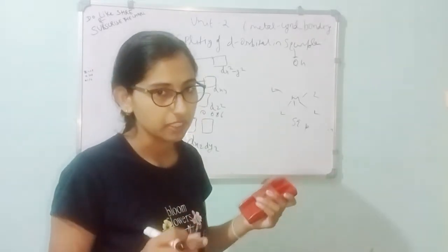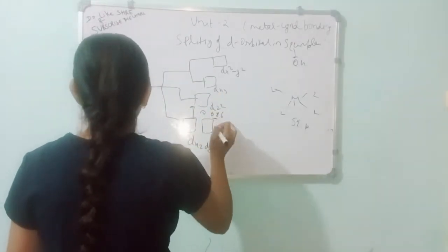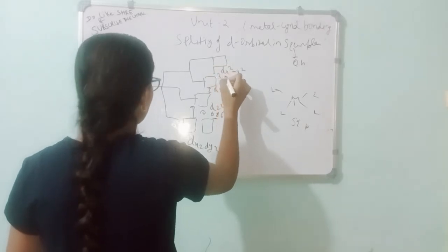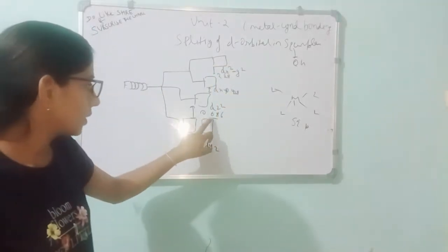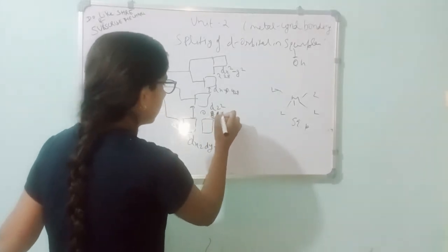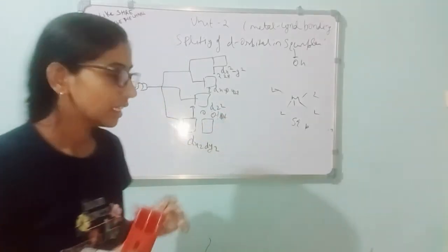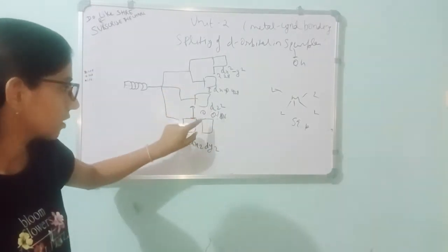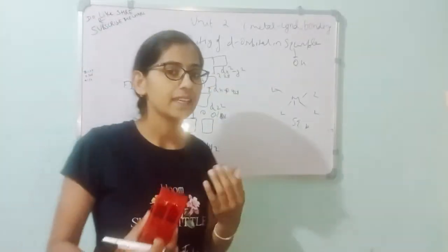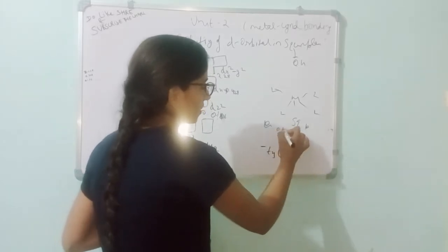The relevant crystal field stabilization energy values to remember are: T2G contribution is 0.4, and then we have values of 0.086, 0.428, 0.8, and 0.6 for the different energy levels in the square planar splitting diagram.